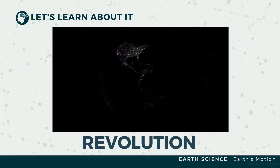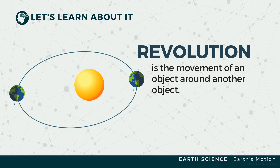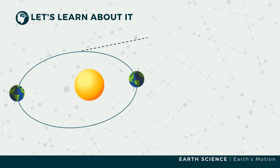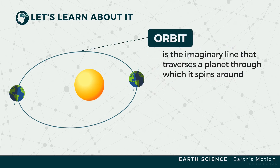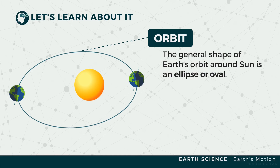Revolution is the movement of an object around another object. The path on which the revolving object moves is called the orbit. For the case of Earth and the other planets in the solar system, the Sun is the central body where everything in the solar system revolves. The general shape of Earth's orbit around the Sun is an ellipse, or oval, as astronomer Johannes Kepler stated in one of his three laws of planetary motion.